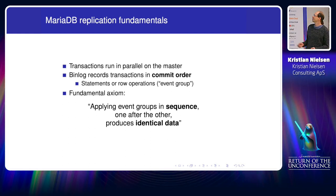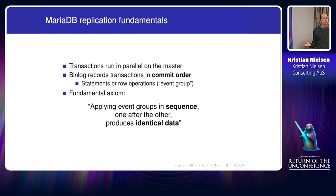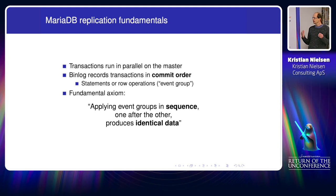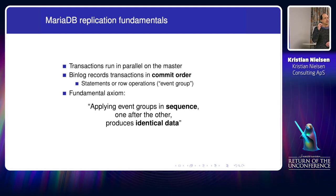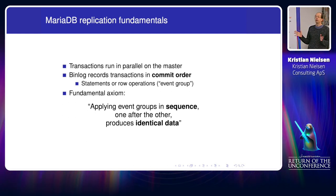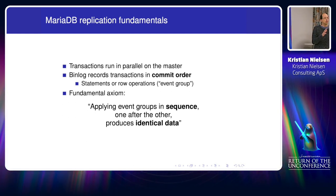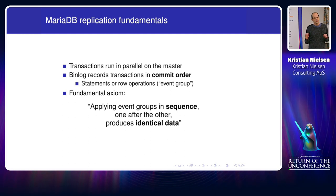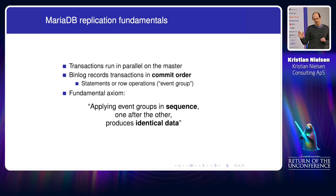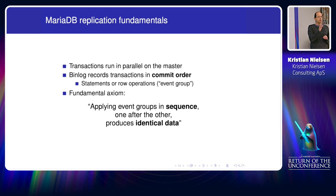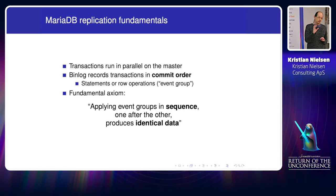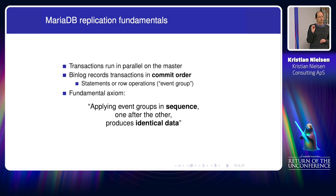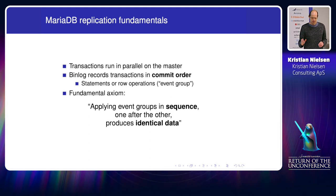So what is the core? At the core we have a master server. It runs some transactions in parallel in different orders. We have multiple connections, and when a transaction commits, we write the transaction into what we call the binary log — the bin log — in the order that the transaction commits. The fundamental action is: if we apply them one after the other in order on the slave, we get the exact same data on the slave as on the master.